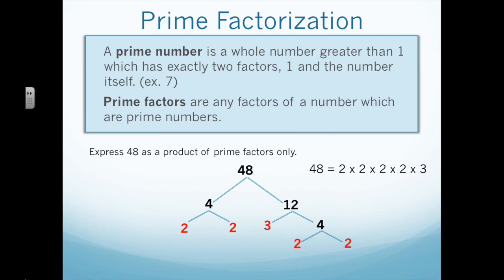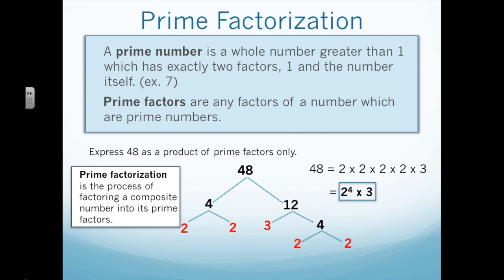When we have prime numbers at the bottom of our tree, we know we are done and can write the number as a product of its prime factors. So, 48 equals 2 times 2 times 2 times 2 times 3. But we can write this in exponent form: 2 times 2 times 2 times 2 is the same as 2 to the 4th power. So, what we have is 2 to the 4th power times 3, and we put a box around that as our final answer. Prime factorization is the process of factoring a composite number, such as 48, into its prime factors.